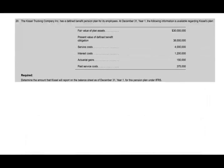Let's take a look at a few examples. Remember, every time I say examples it means I covered the topic already, so look at the prior session. K Trucking Company has a defined benefit pension plan. On December 31st, the following information is available: fair value of the plan asset, present value of the defined benefit obligation, service cost, interest cost, actuarial gains, and past service cost. Determine the amount the company should report on the balance sheet.